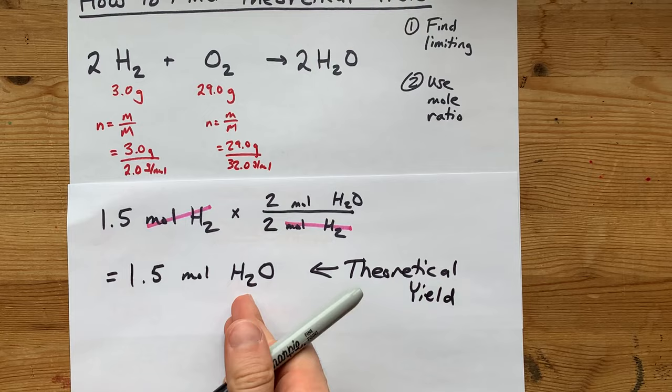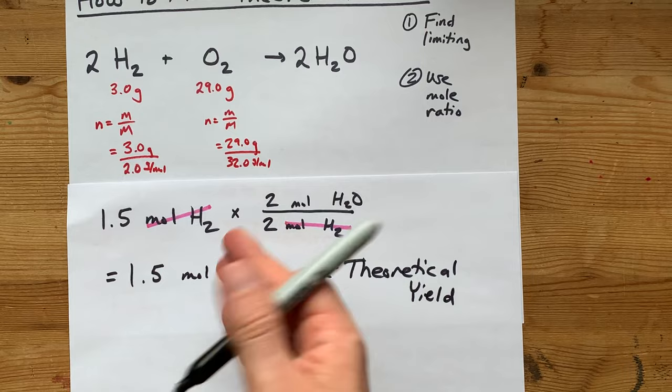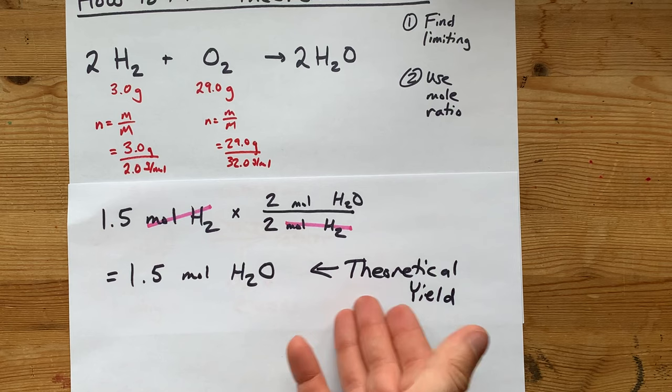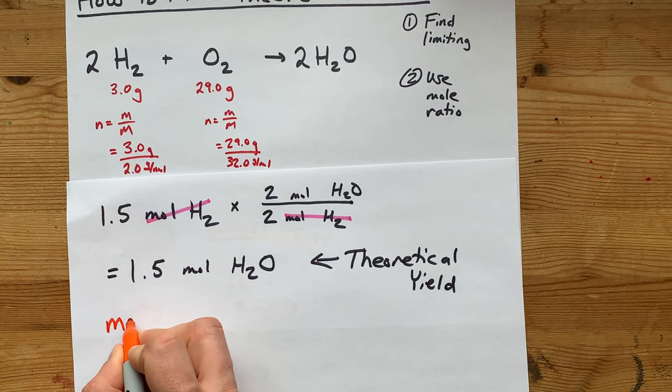It is how much water, or rather your product, is made when your limiting reactant is used up totally. Now, you may have been asked for grams of yield, like how many grams of it was made. That's a quick calculation as well.